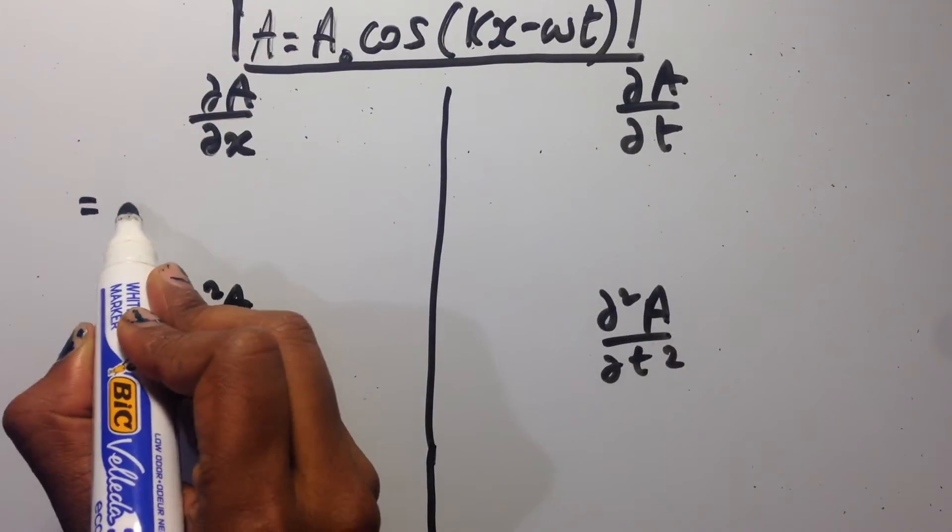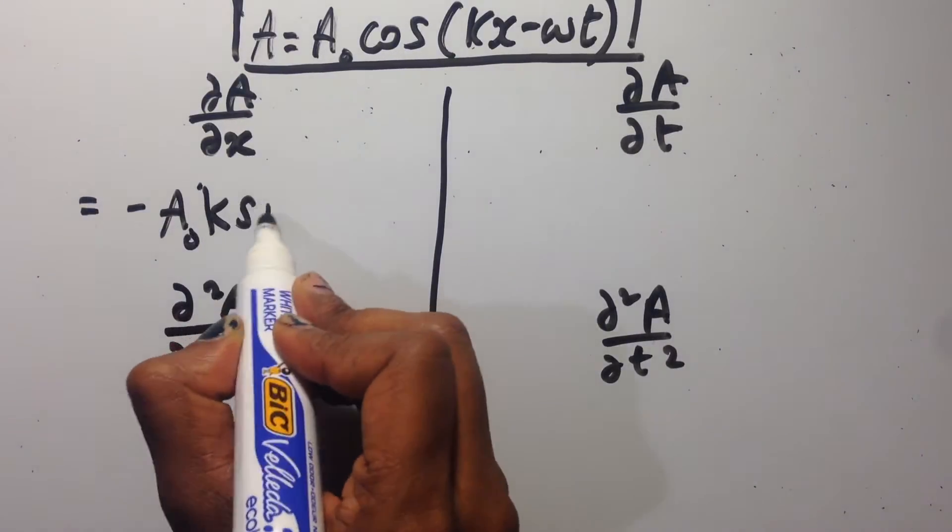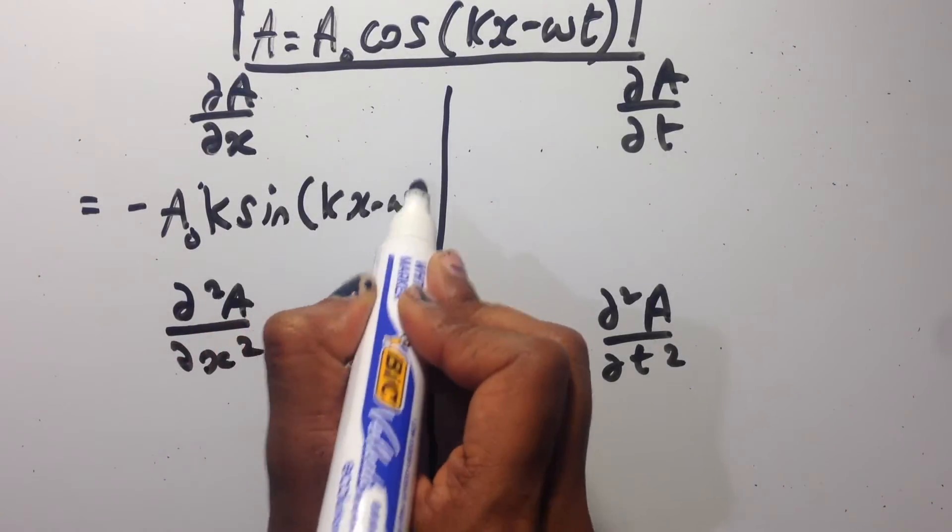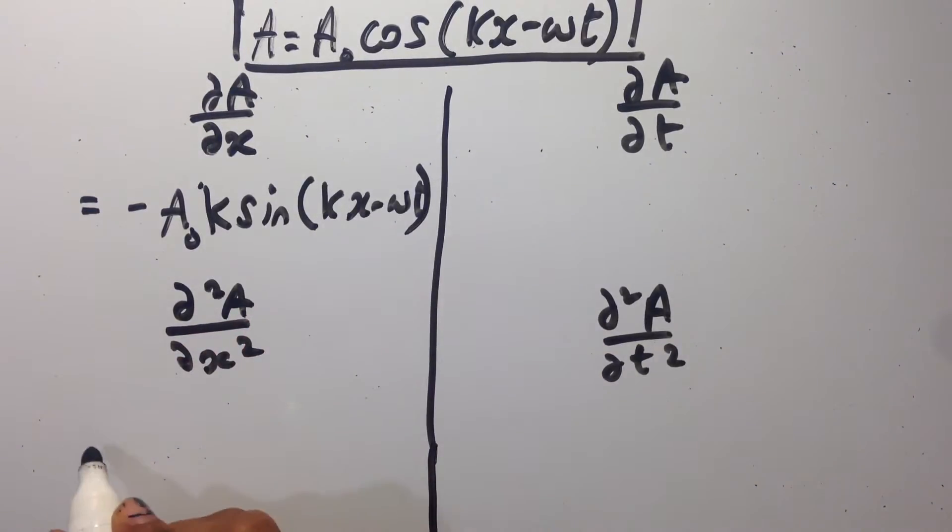Let us now differentiate our solution with respect to x and then differentiate again so we obtain d squared A by dx squared. We therefore obtain minus k squared A.